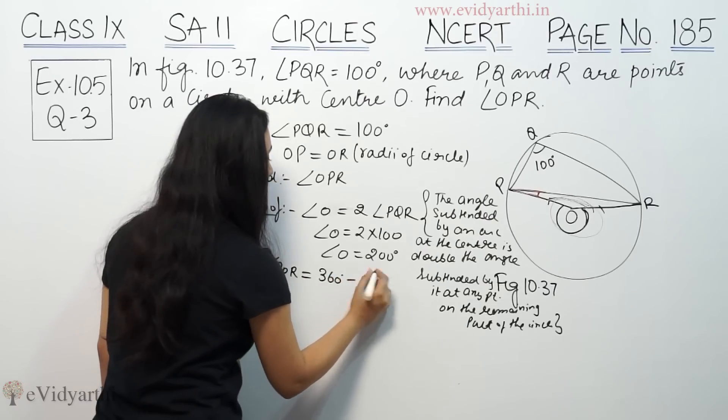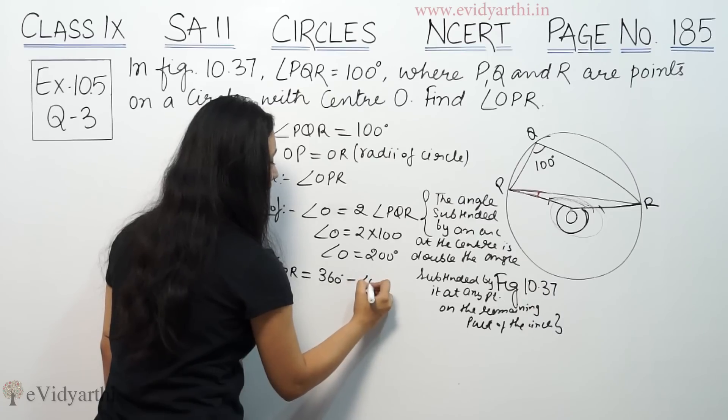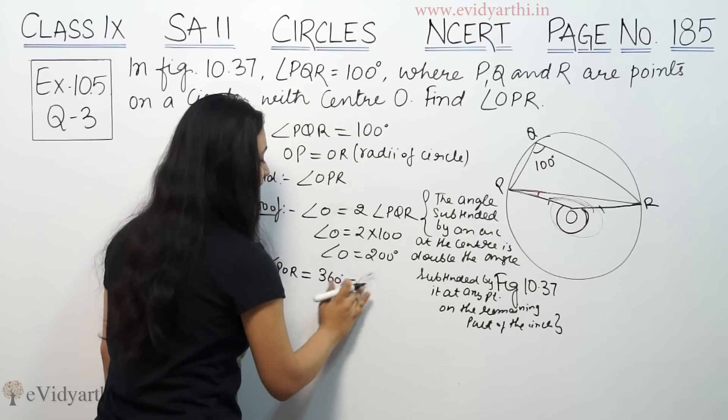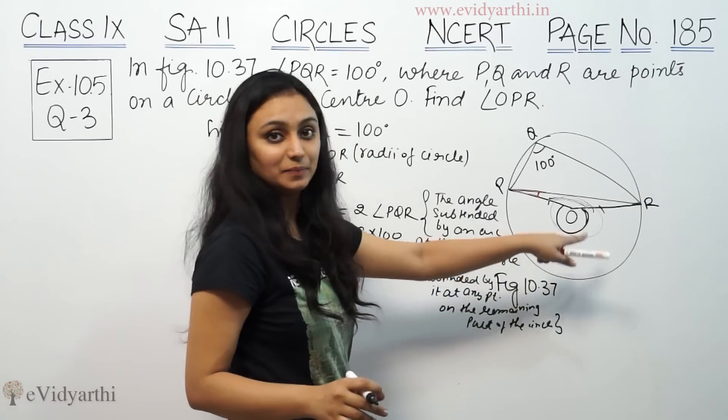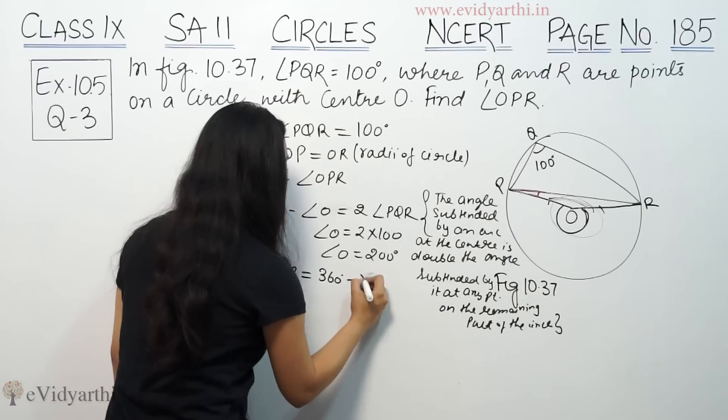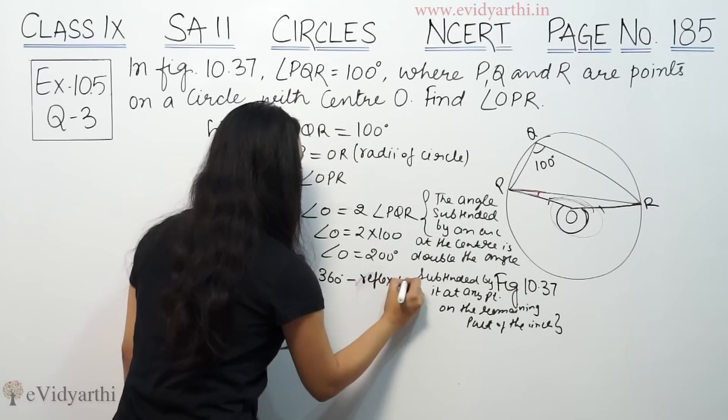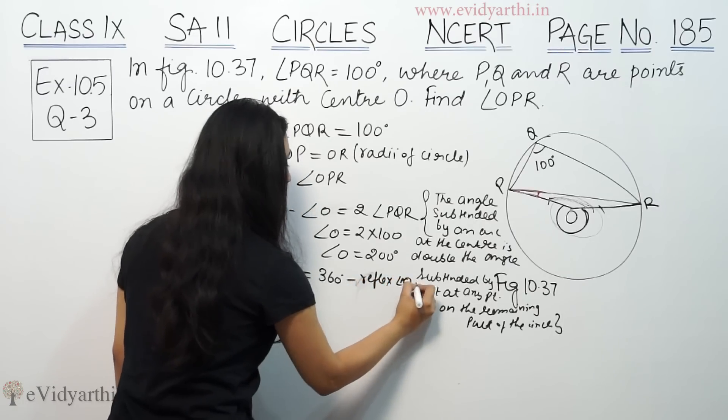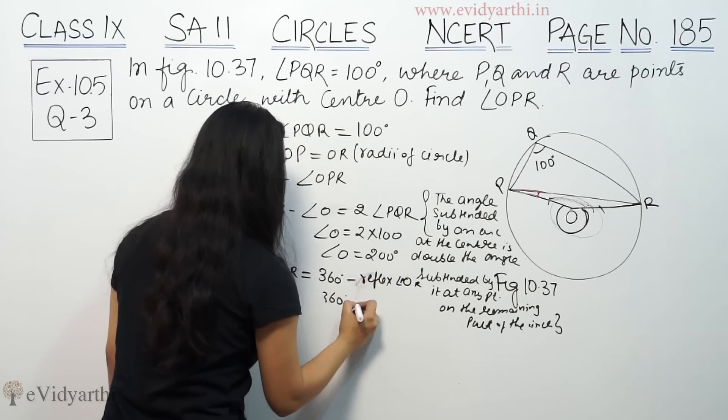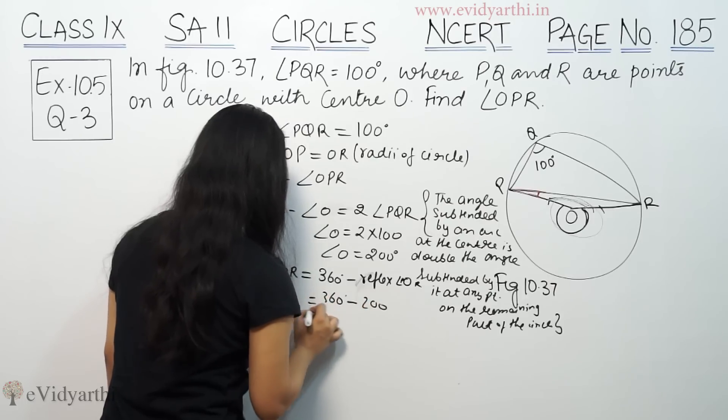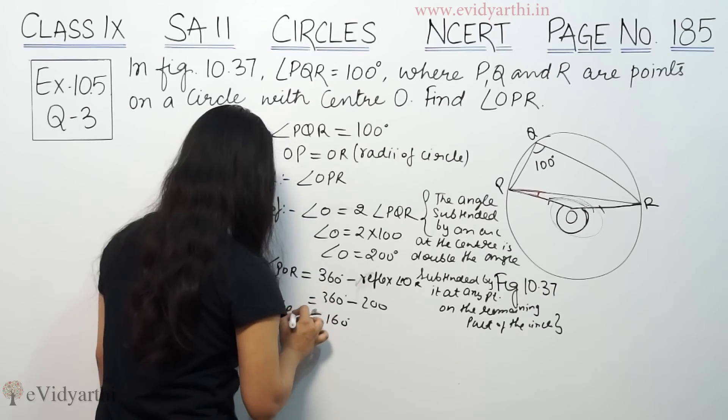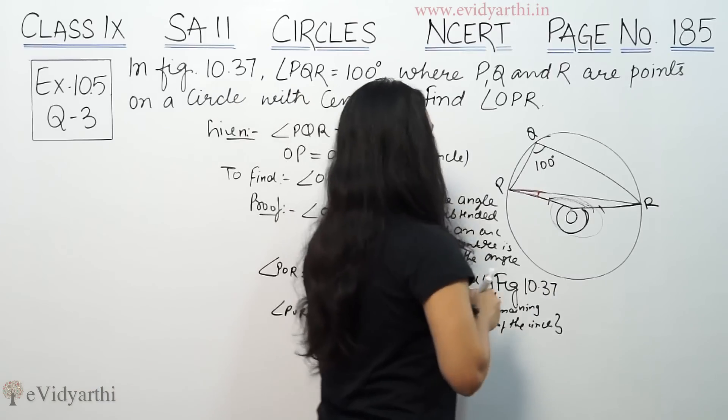is equal to 360 minus angle O. This is the reflex angle, so 360 minus reflex angle O, so 360 minus 200, this is 160 degrees. So angle POR, this is 160.